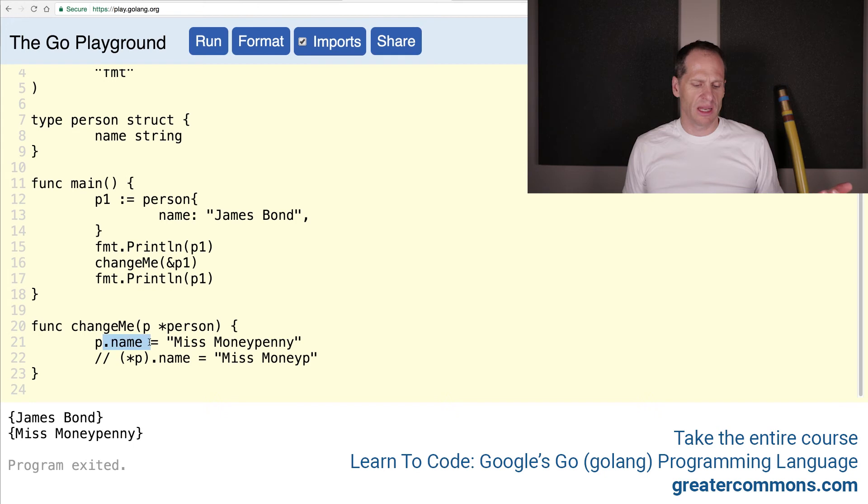And then we could just do, hey, that person, the name is equal to this. And that gives us Ms. Moneypenny. Or if we wanted to, we could run them both. We could leave that uncommented and run it, and it changed it to Ms. Moneypenny, and then changed it to Ms. Moneyp, and that worked also.